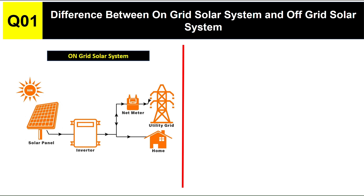You can observe one key thing here: there is no storage system — batteries are not present in this diagram. Batteries are not part of the on-grid solar system.